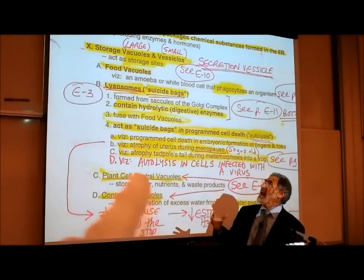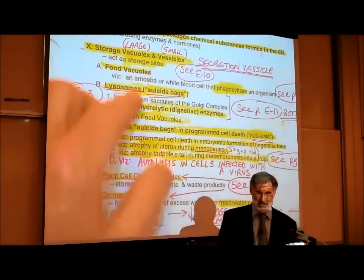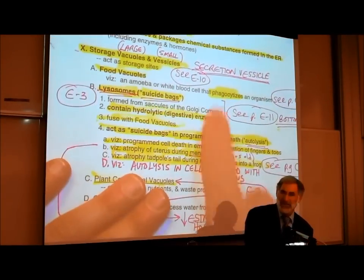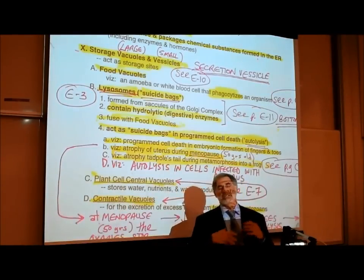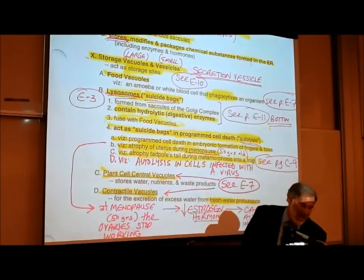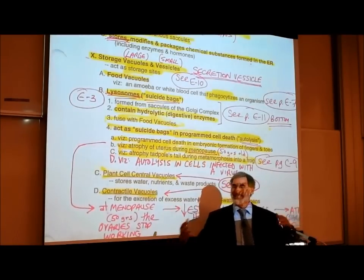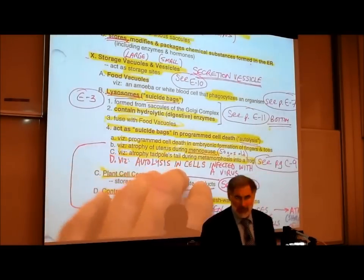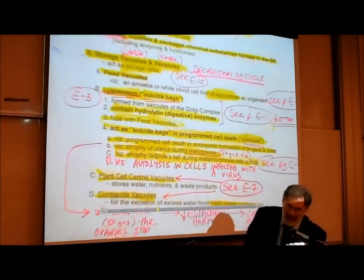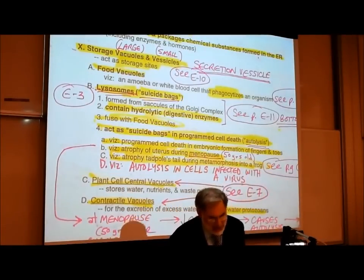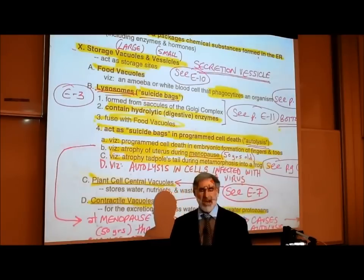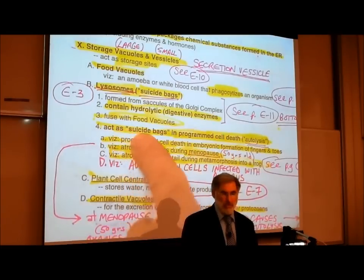We were learning about membranous sacks that store chemicals — vacuoles if they're large, vesicles if they're small. Secretion vesicles play a role in secretion or exocytosis of chemicals from cells. We also spoke of food vacuoles formed after a cell phagocytoses or engulfs something via endocytosis. Then we spoke of lysosomes, which have the strange nickname 'suicide bags.' Lysosomes are formed from the flat pancake-like sacs of the Golgi complex, contain digestive enzymes, and fuse with food vacuoles.